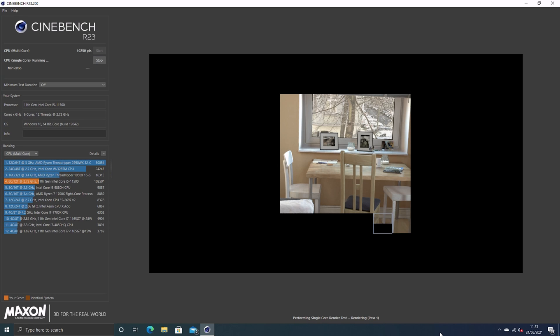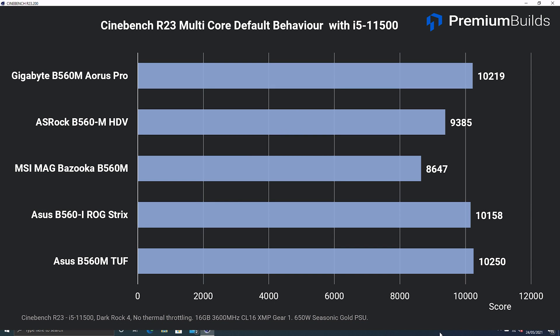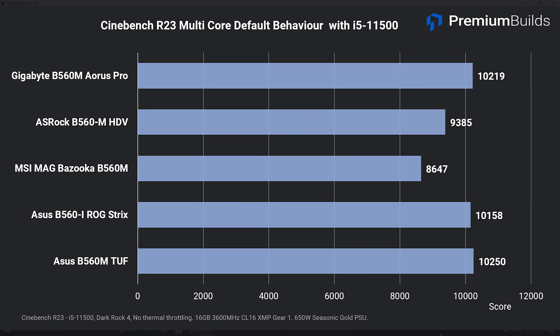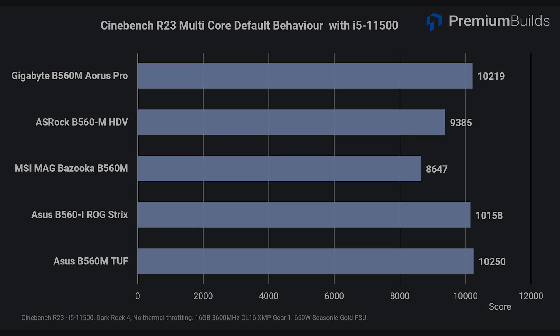Here are the test results for the five boards I've tested in Cinebench R23 under default settings. They've been set up with XMP memory profiles applied at 3600 MHz CL16, but that's it — this is the exact same CPU under the exact same conditions. The MSI Bazooka delivers 1500 points lower than the two ASUS boards and the Gigabyte Aorus Pro, while the ASRock B560M HDV is about 800 points down on optimal CPU performance.